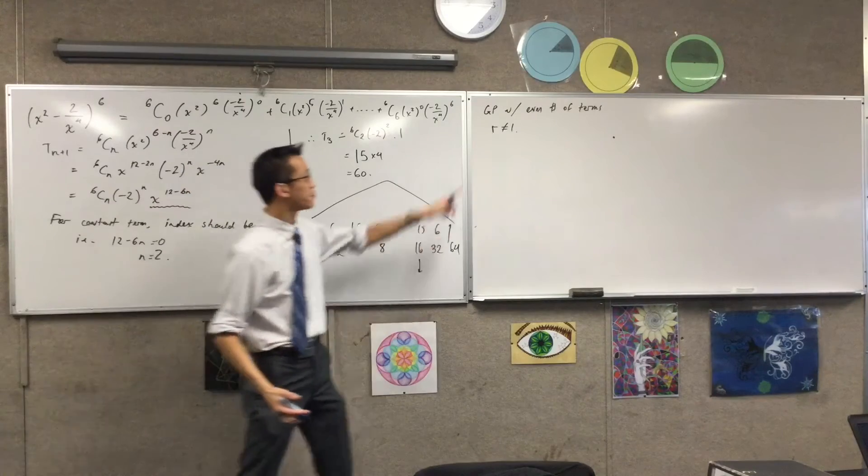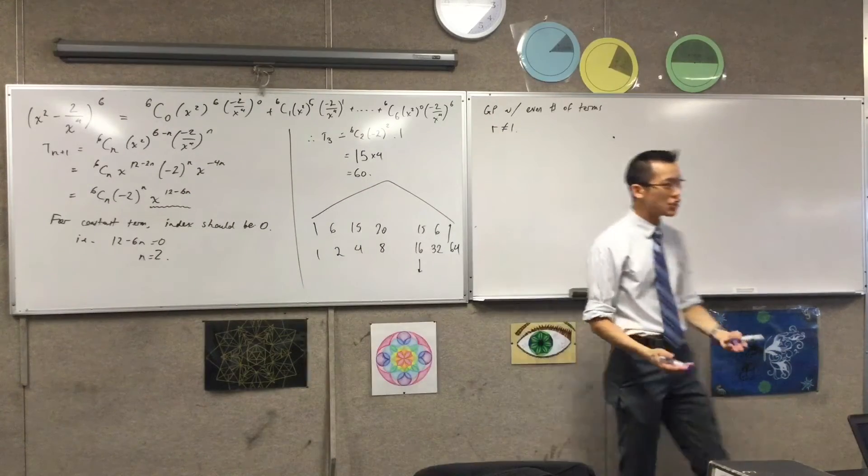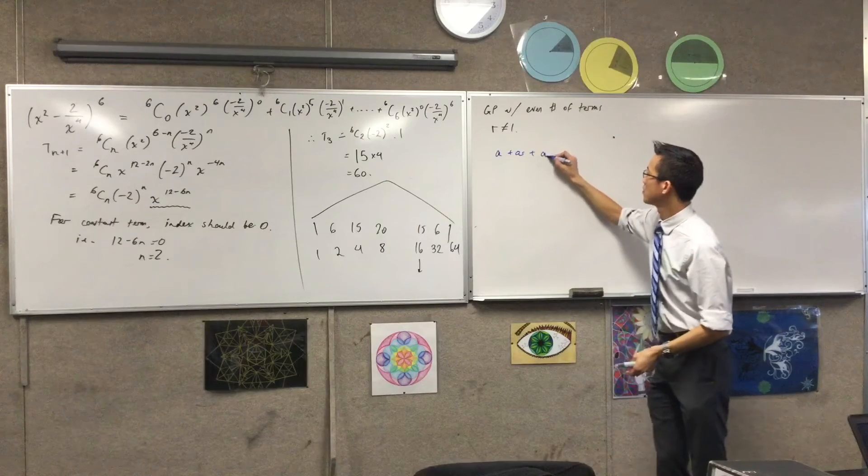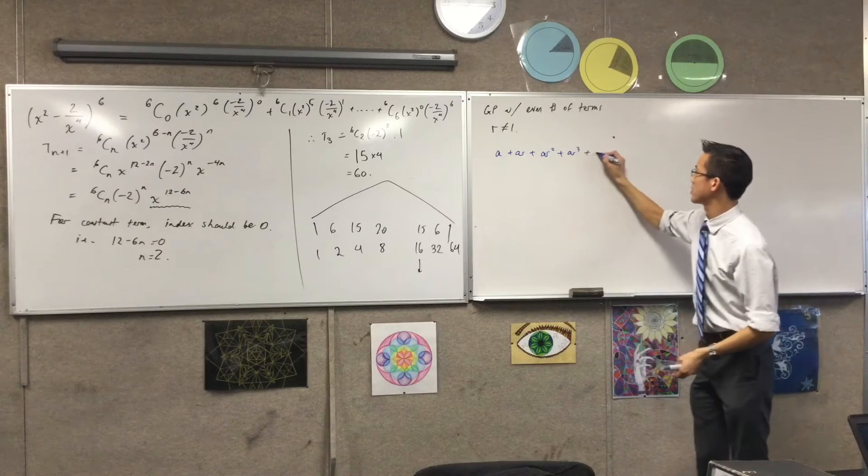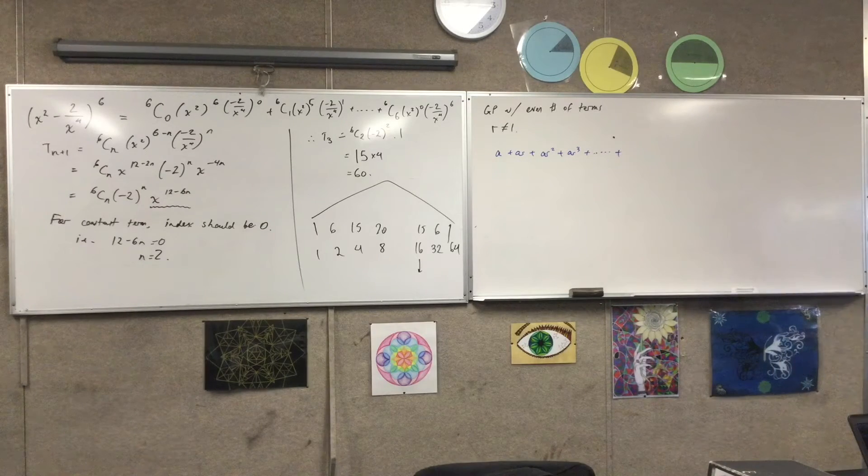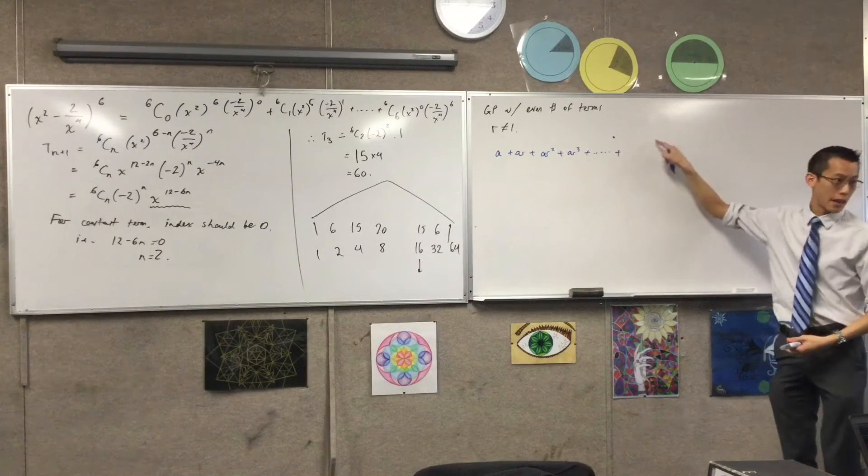So here's where I'm going to start. There's a GP. It has an even number of terms. Every GP is in this form: A plus AR plus AR squared. I'm going to do another term, just for the sake of it. What will my last term be? My last term, the nth term, would be AR to the n minus 1.